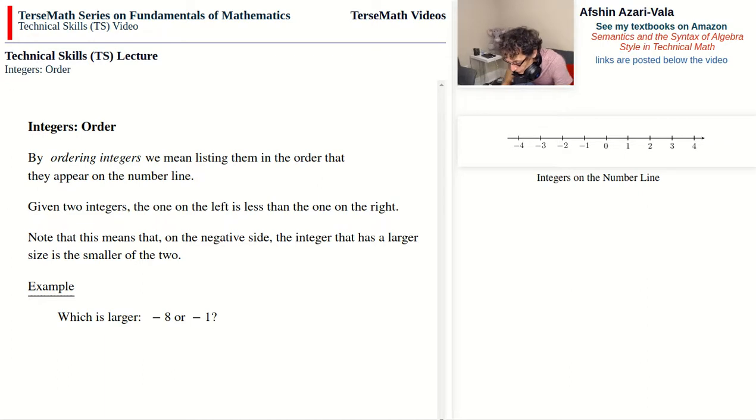Here's a problem. Which is larger, negative 8 or negative 1? If you visualize negative 8 and negative 1 on the number line, negative 8 is on the left of negative 1, and therefore we can say that negative 8 is less than negative 1, or we can say that negative 1 is larger than negative 8. So the answer to this problem is negative 1.